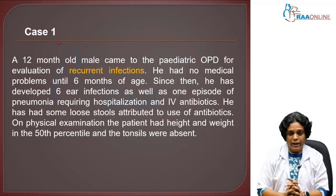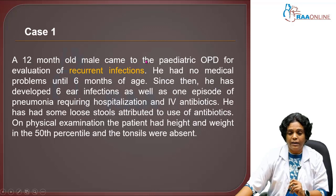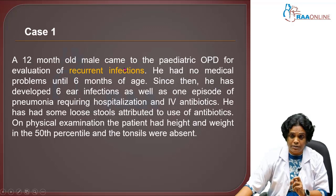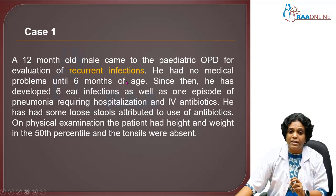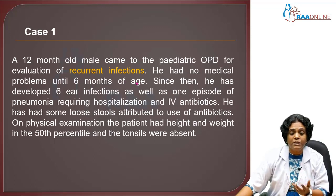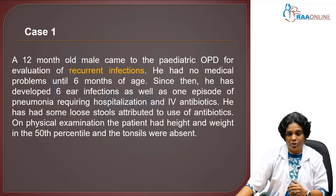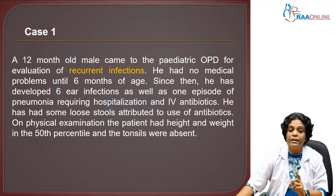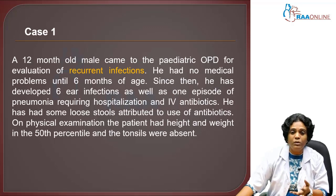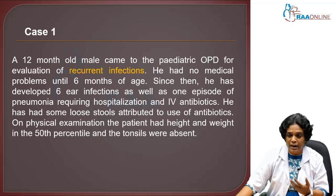Now let's look at a case. A 12-month-old male came to the pediatric OPD for evaluation of recurrent infections. He had no medical problems under six months of age, because immunity is provided by maternal antibodies. Since then, he developed six ear infections and one episode of pneumonia requiring hospitalization and IV antibiotics. He also had loose stools attributed to antibiotic use. On physical examination, height and weight were at the 50th percentile, and the tonsils were absent.